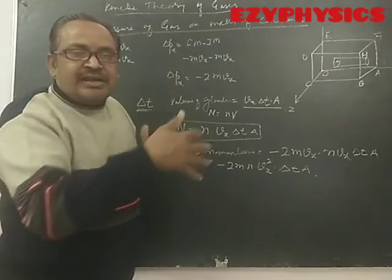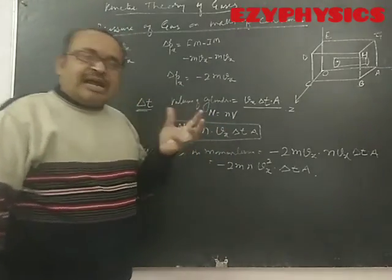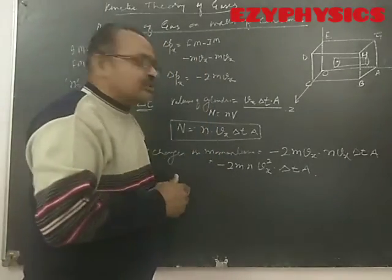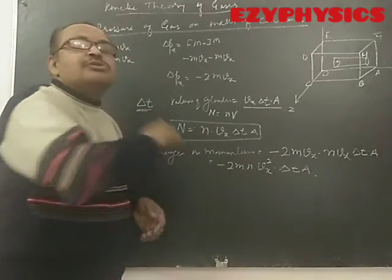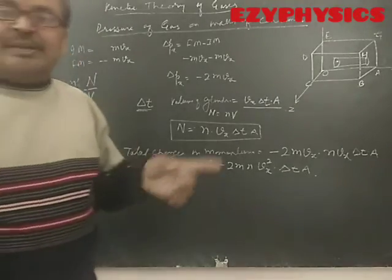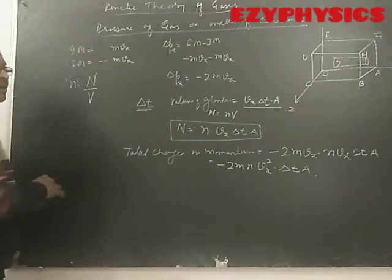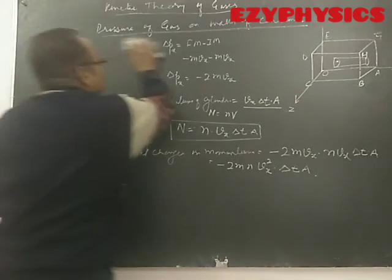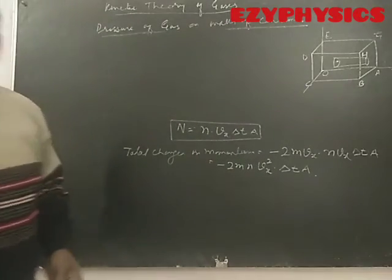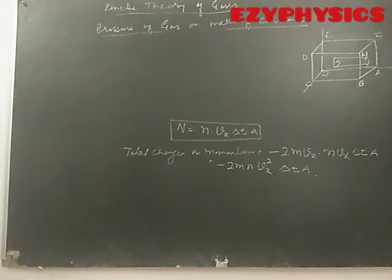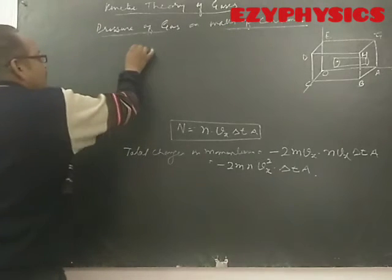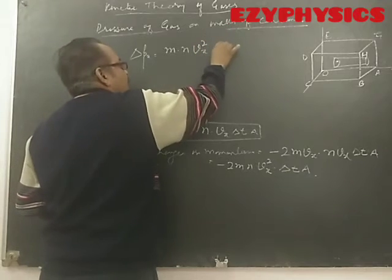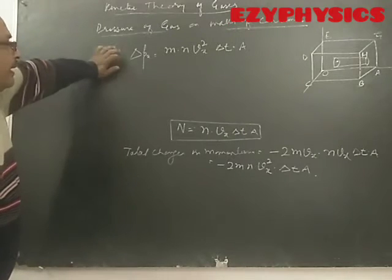However, because there is random motion, when you start taking observation, some particles are going toward the wall and some are coming back. So on average, only half of the molecules will be hitting the wall. Therefore, the change in momentum ΔPx will be halved, giving: ΔPx = M · n · Vx² · ΔT · A.